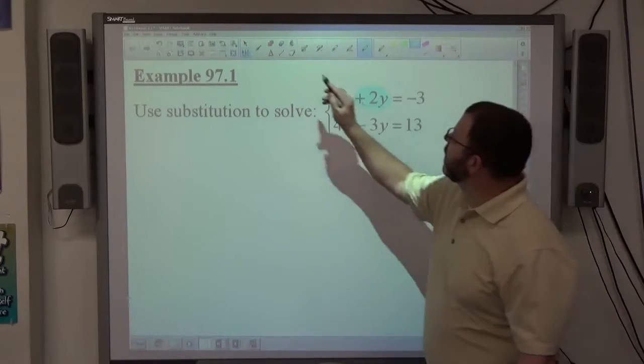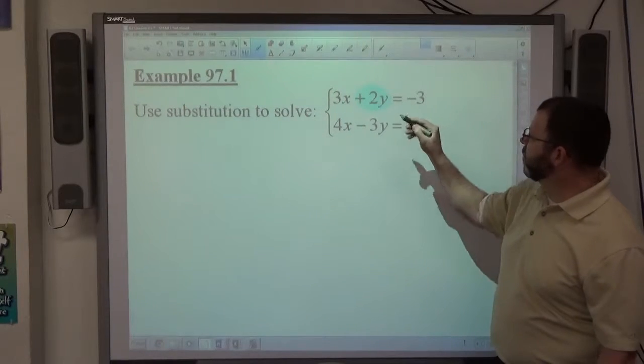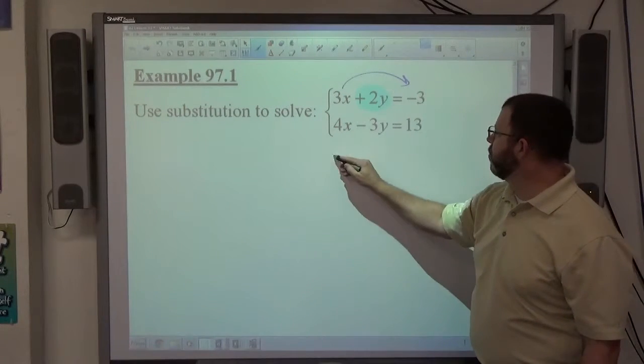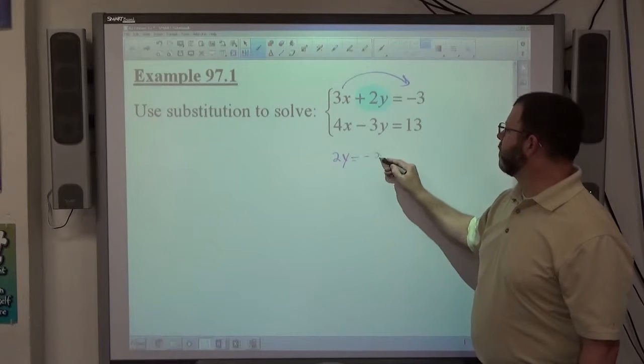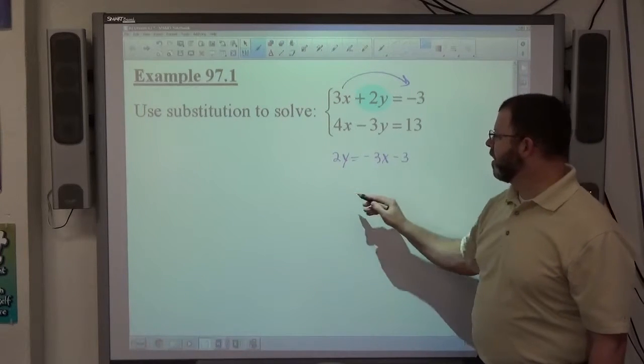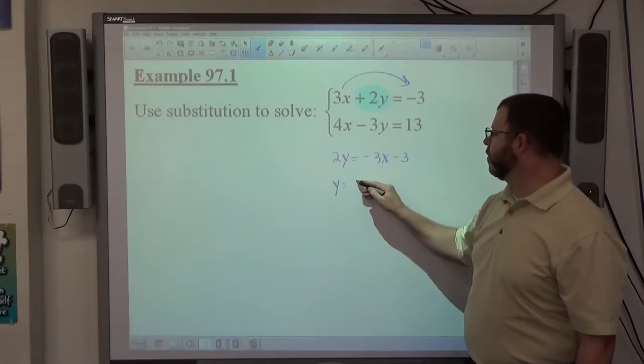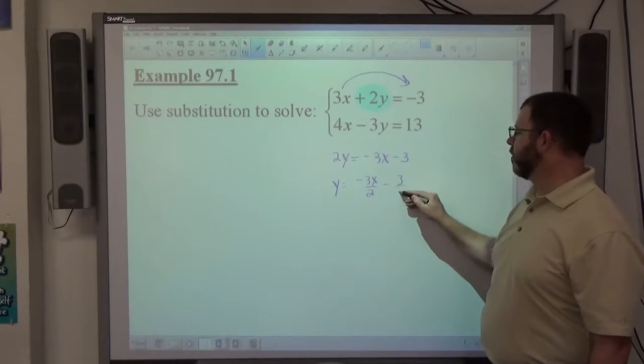All right, if I take the top equation and make it say y equals, first thing I do is move the 3x over here. That gets me 2y is equal to negative 3x minus 3. Divide by 2, I get y is equal to negative 3x over 2 minus 3 over 2.